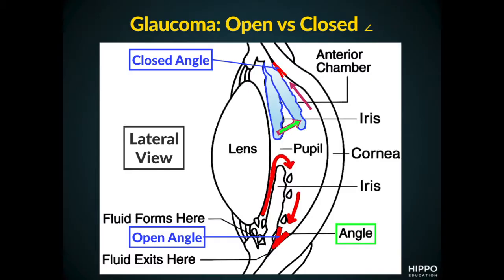Let's take a look at this diagram. We see a lateral view of the front of the eye, and the angle we're talking about is outlined in that green box at the bottom. The normal flow of aqueous humor is depicted by those red arrows, showing the circulation from the ciliary body all the way to that angle, which is where it drains out. The angle is made by the iris and cornea junction. Closed angle, on the other hand, is a circumstance where the iris either gets pulled or pushed toward the cornea, narrowing that angle and impeding outflow of the aqueous humor.